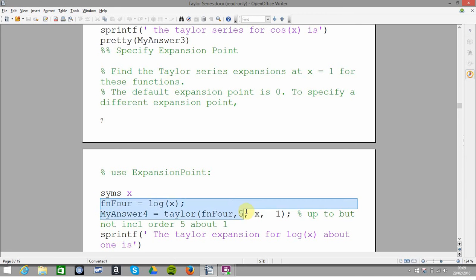There's the commands here. I've defined the function as fn4, and then I've called the Taylor of it fn4, 5, that'll give me up to order 5, for x about 1.